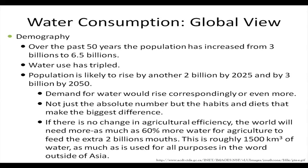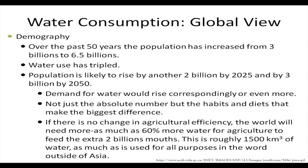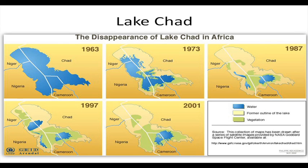The kind of grains we grow also has an impact on the water footprint. If agricultural efficiency does not improve, the world will need as much as 60 percent more water for agriculture to feed the extra 2 billion people. This is roughly 1,500 cubic kilometers of water — as much as is used in the entire world outside Asia right now. So based on all this, we need to look at the global view: a lot of water is needed.